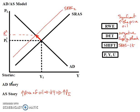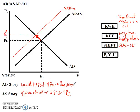Now that leads to an aggregate demand story. We could do three aggregate demand stories here — the wealth effect, the interest rate effect, or the international trade effect — but I'm just going to do the wealth effect. As prices begin to rise, my real wealth is going to begin to decline.